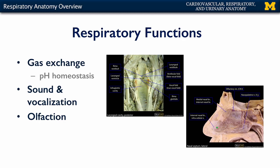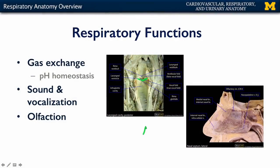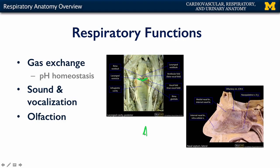Another important function of the respiratory system is the production of sound and vocalization. This is accomplished using portions of the larynx, or your voice box. In particular, there are vocal folds containing vocal ligaments. As these vocal folds are abducted or brought together and air is passed over them rapidly, they vibrate and produce sound. That sound may be shaped by our oral cavity and its constituents and provided resonance by our nasal cavity. This is one of the major ways in which we can communicate.